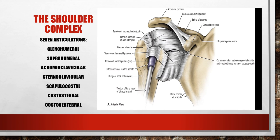The sternoclavicular joint is the anchoring point of the upper extremity to the thorax. The scapula is not really attached by ligaments — it's attached by muscles and has to be stabilized for proper shoulder function. The first part of our discussion on muscles and movements will be on the scapula. It's important to note that all muscles that move the shoulder are innervated by the brachial plexus, from C5 to T1.